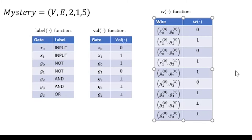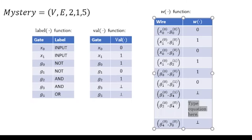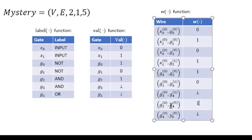Is there anything else where we know all the inputs? There are two edges feeding into g2, and we know both of them — both are 1. We look up the label for g2, which is AND, so we do 1 AND 1, giving us 1 as g2's value. Every edge that starts with g2 now has its value: the edge g2 to g4 carries 1.